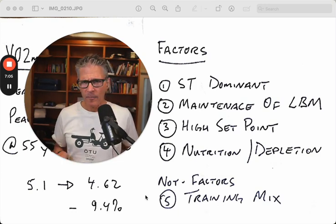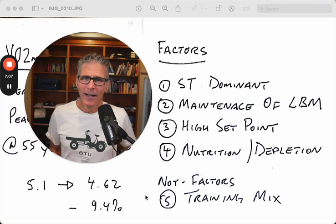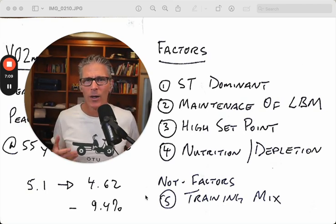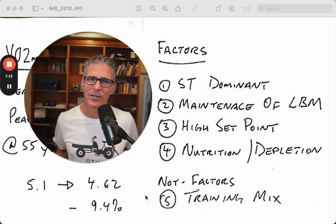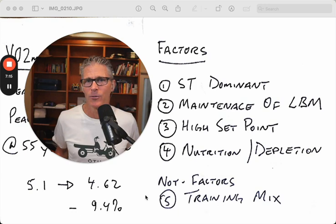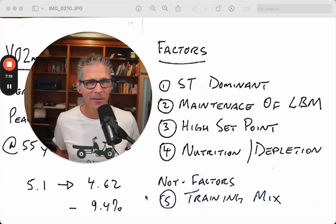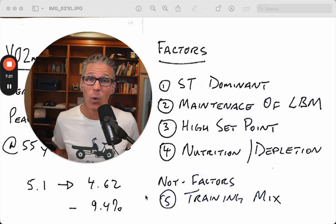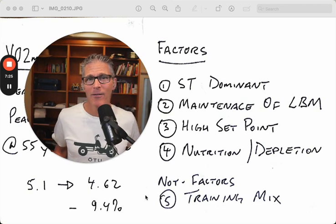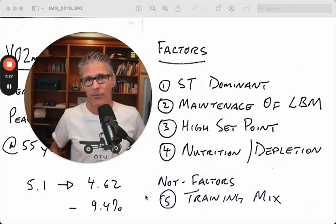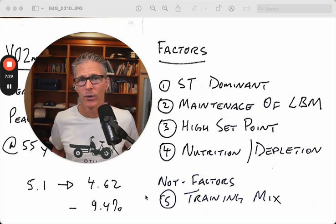Third point: another kind of genetic factor. I happen to be what I call a high set point athlete. When I was younger I was naturally anabolic, which meant it was easy for me to gain strength but also easy for me to gain weight, both muscle and fat. I don't have an ectomorphic profile. I'm a relatively high set point athlete.